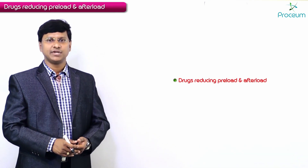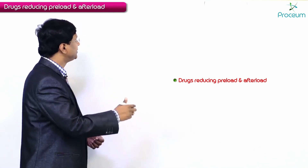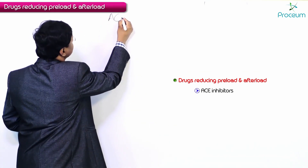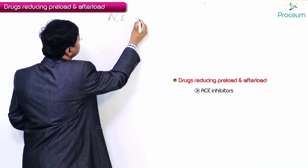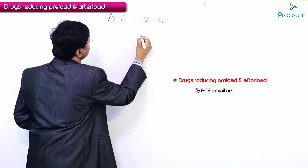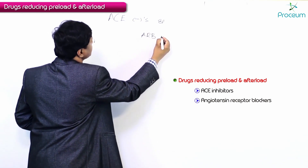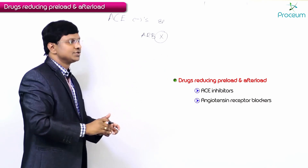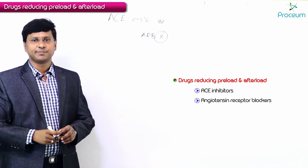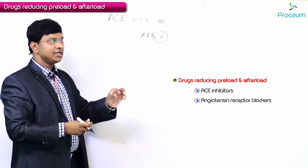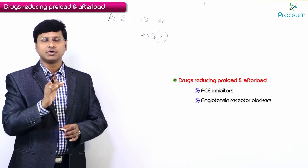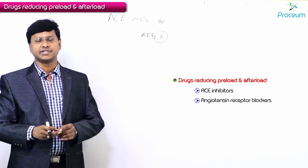Let me discuss the drugs which reduce both preload and afterload. The group of drugs which reduce both preload and afterload are ACE inhibitors and angiotensin receptor blockers (ARBs). One important MCQ point about ACE inhibitors and angiotensin receptor blockers follows.